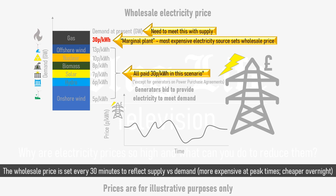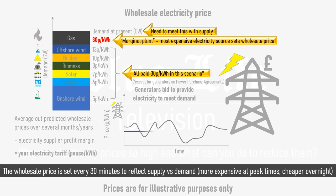Generally speaking, electricity is more expensive at peak times, such as in the evening when everyone's cooking dinner and high demand is met using fossil-fuelled peaking plants, and it's cheaper overnight when demand is low and there's a lot of excess renewable energy available. To determine your household electricity tariff, your electricity supplier averages out the predicted wholesale cost of electricity for the next few months or years, then adds on a profit margin to reach the price you pay per kilowatt hour. Your supplier will likely pay a higher price than your tariff to supply you at peak times, but makes up for this with a profit during off-peak times.